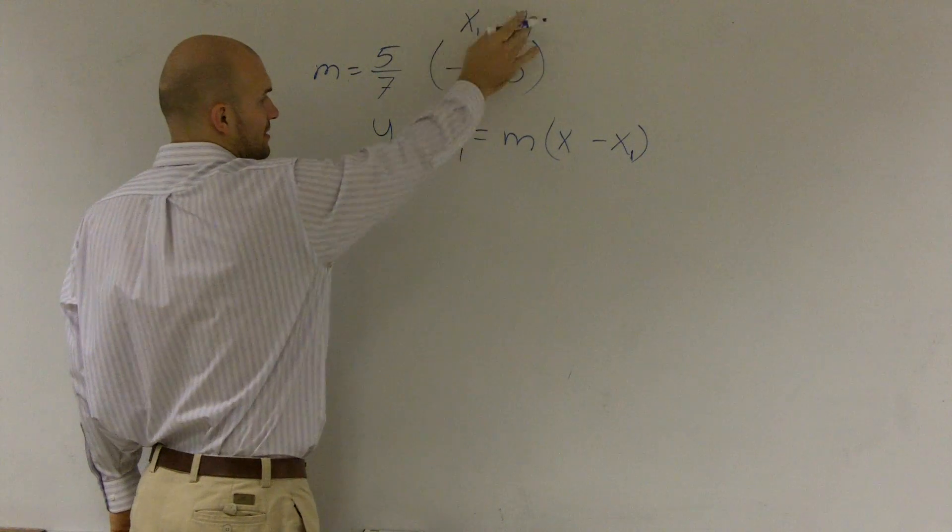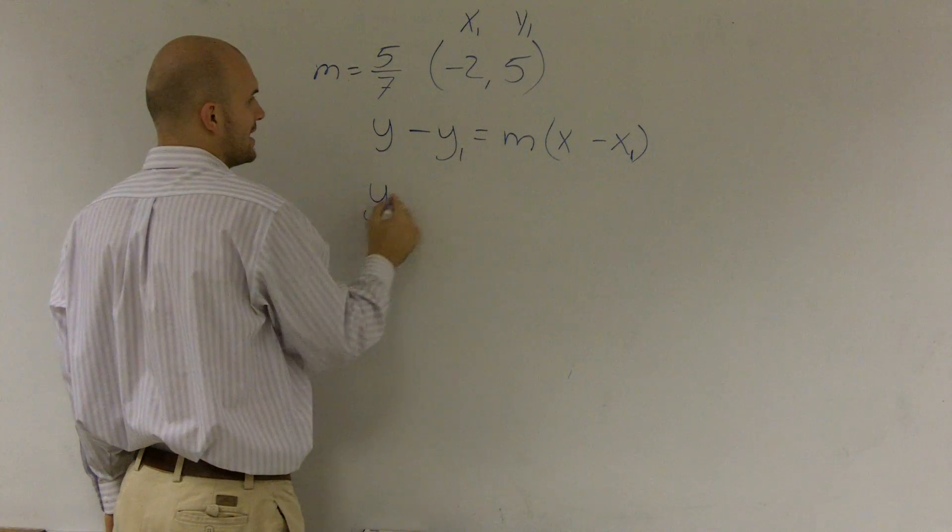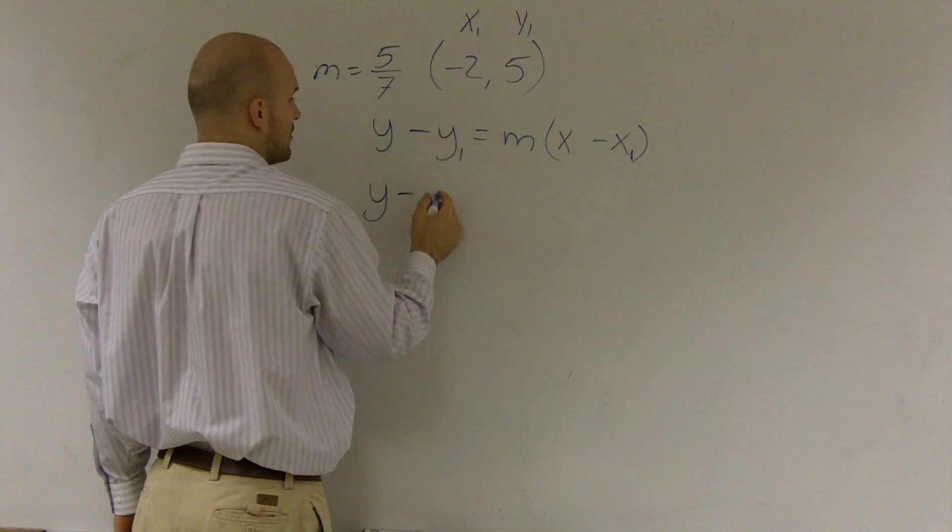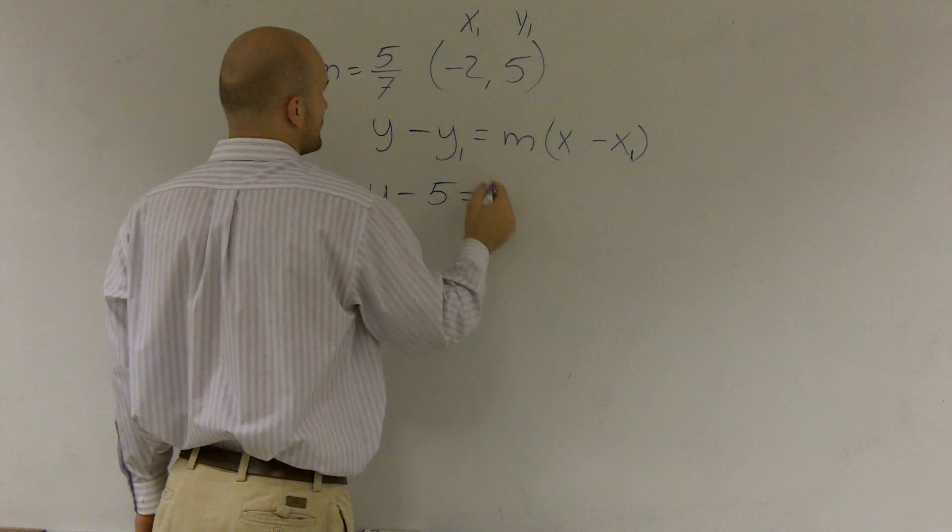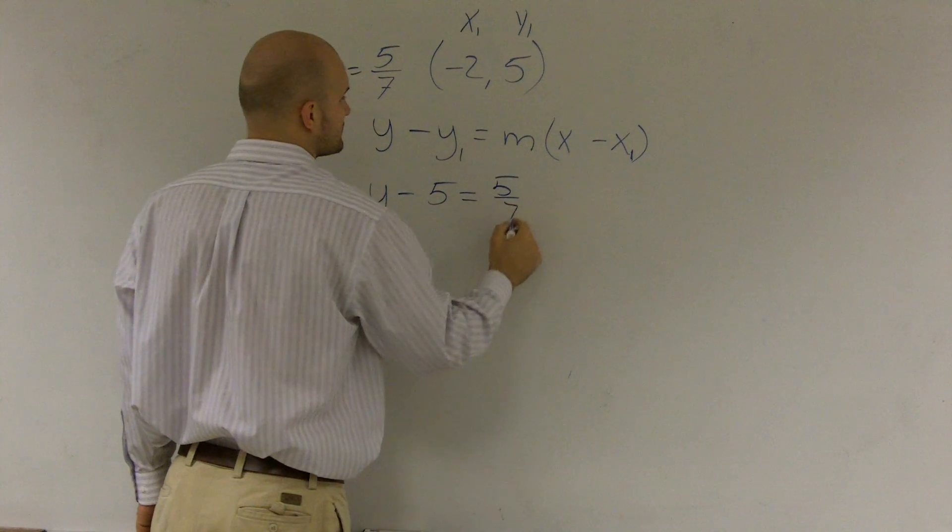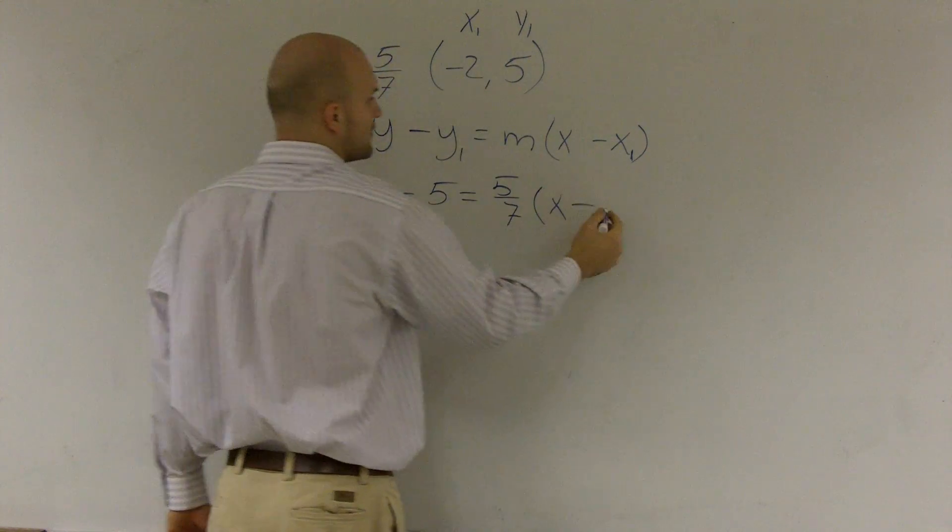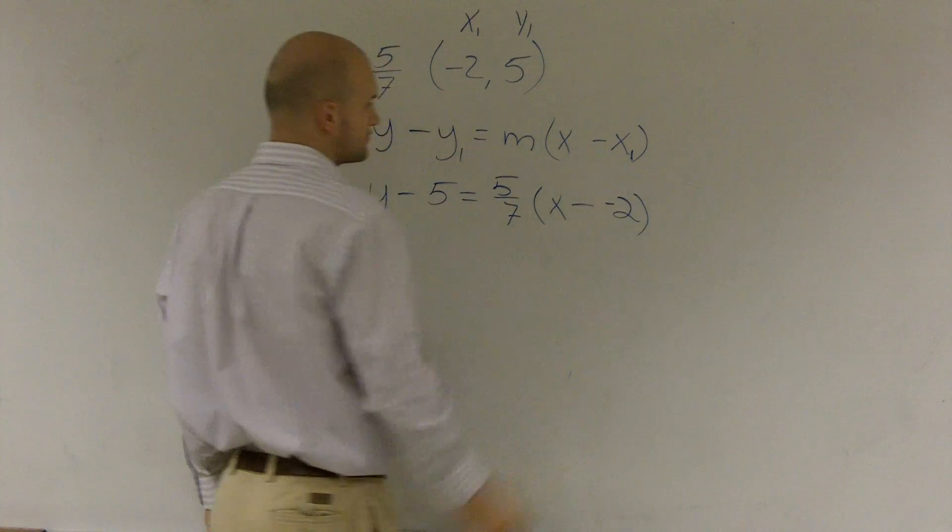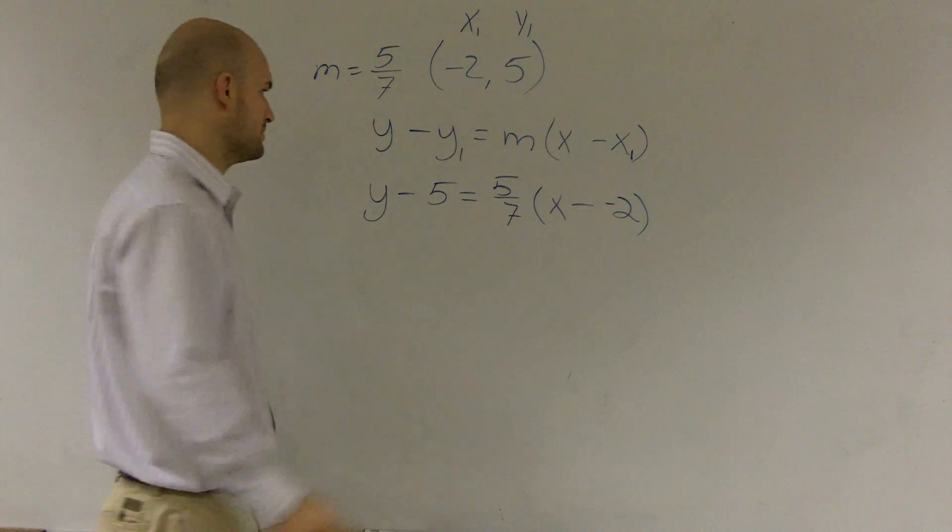So now, if I know m is 5 sevenths, and I'm going to label these as x1, y1, I'll have y minus y1, which is 5, equals m, which is 5 sevenths, times x minus x1, which was a negative 2. Well, that's going to become a double negative.